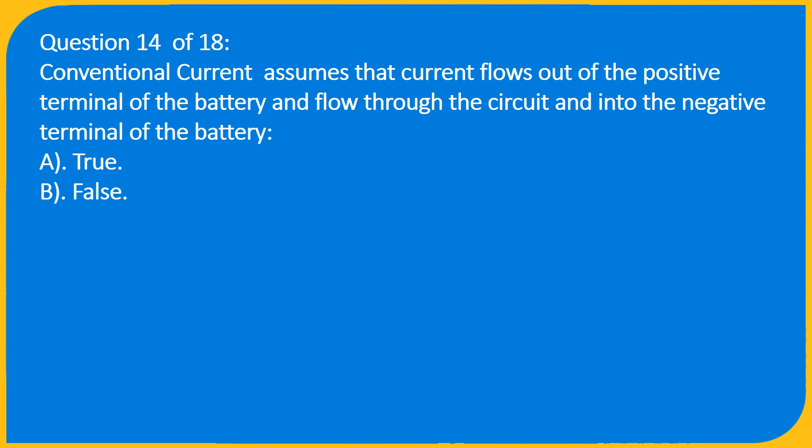Question 14 of 18: Conventional current assumes that current flows out of the positive terminal of the battery and flow through the circuit and into the negative terminal of the battery. A. True.